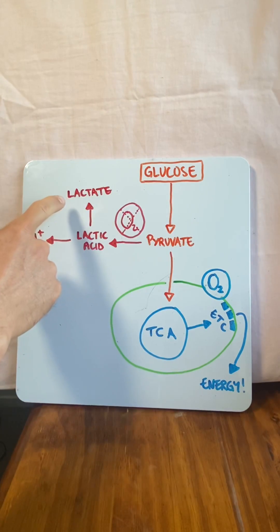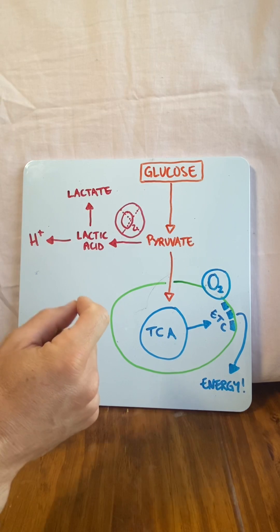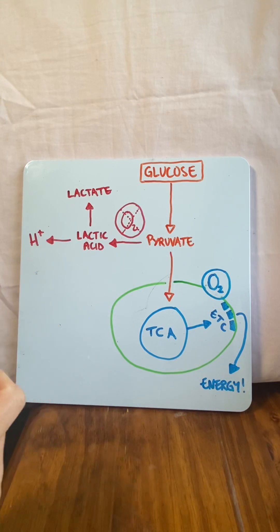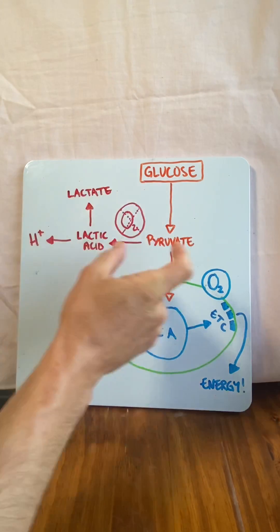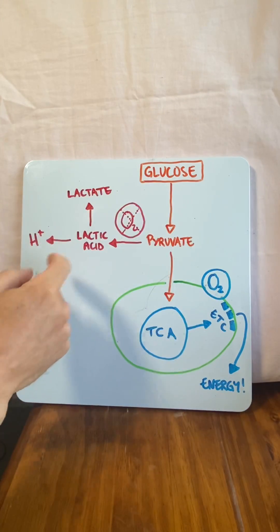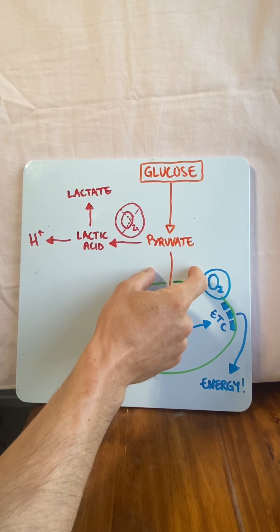In actual fact, lactate outnumbers pyruvate in resting muscle tissue 10 to 1, and in active muscle tissue 160 to 1. So lactate isn't just a product of anaerobic metabolism, but is the normal end product of glycolysis.